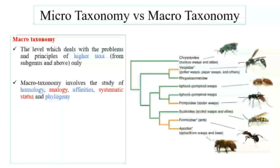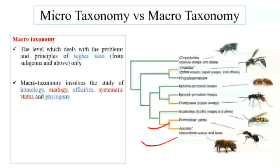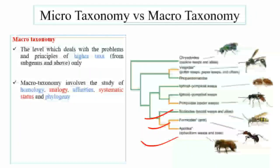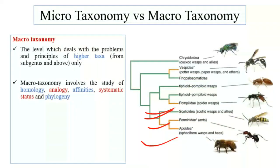For example, in this figure you can see families belonging to the order Hymenoptera — the Apidae family which includes apiform wasps and bees, the Formicidae family which includes ants, the Scoliidae family with scoliid wasps, the Pompilidae family with spider wasps. Studying the phylogenetic relationships among these families is Macrotaxonomy.